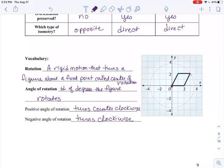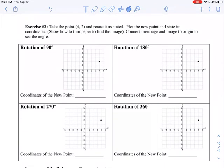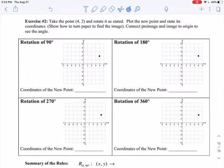So we're actually going to use the same picture that we did back in lesson one when we were doing our reflections. We're going to take the point (4, 2) and we're going to rotate it as stated. And we're going to plot the new point and state its new coordinates. And I'm going to show you in class how you can also turn the paper to find the image. But for right now, we're just going to rotate it. Now, all of our rotations are assumed to be about the origin.